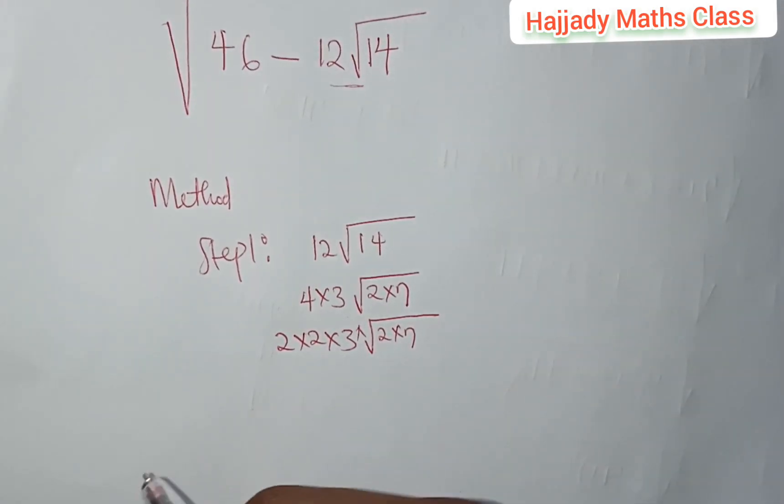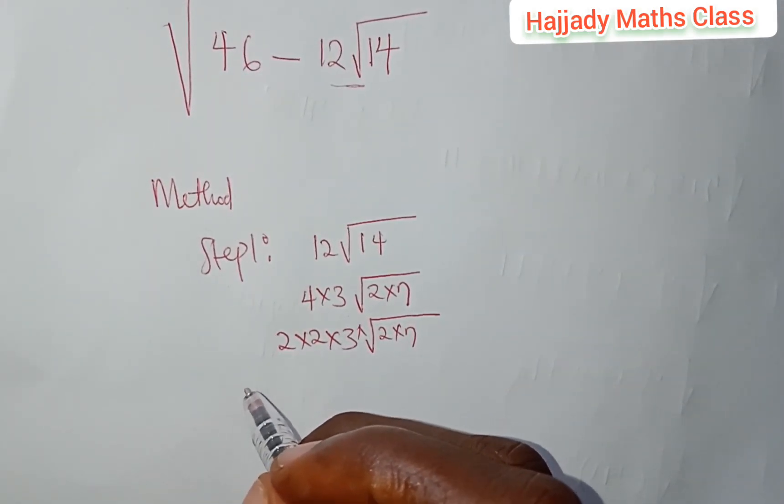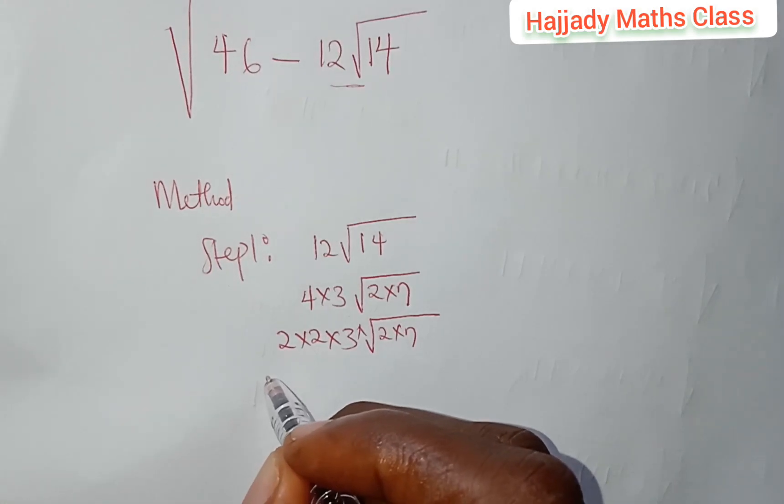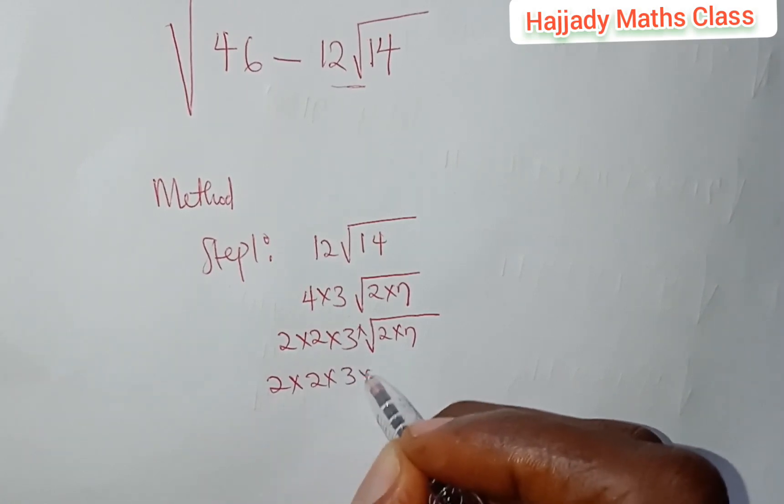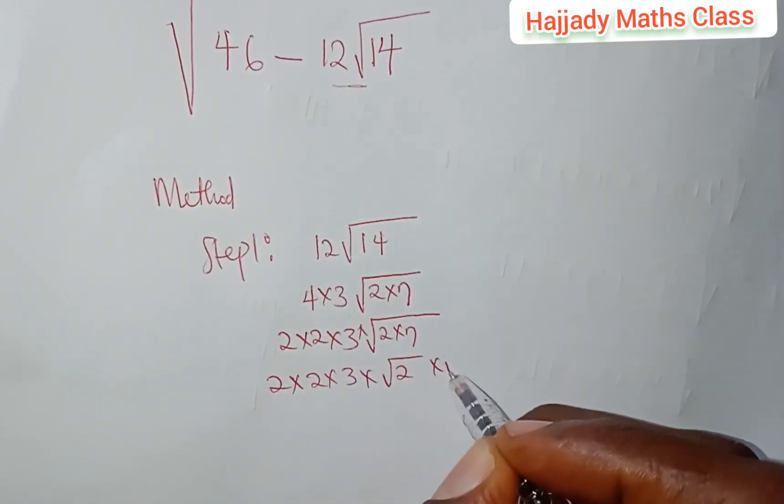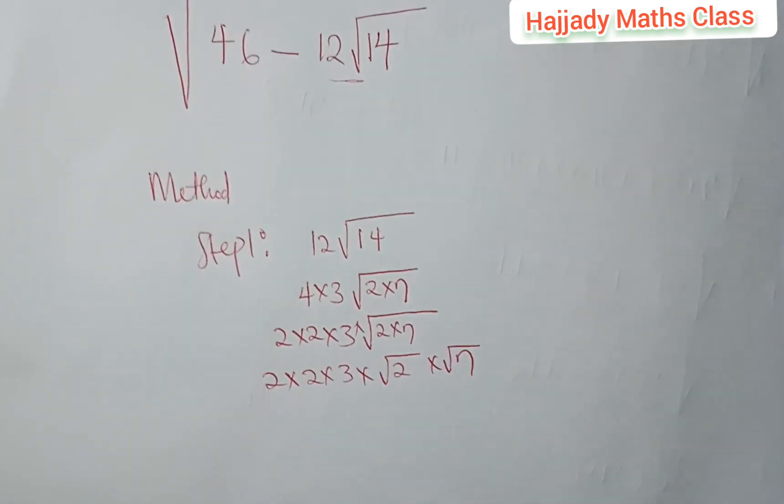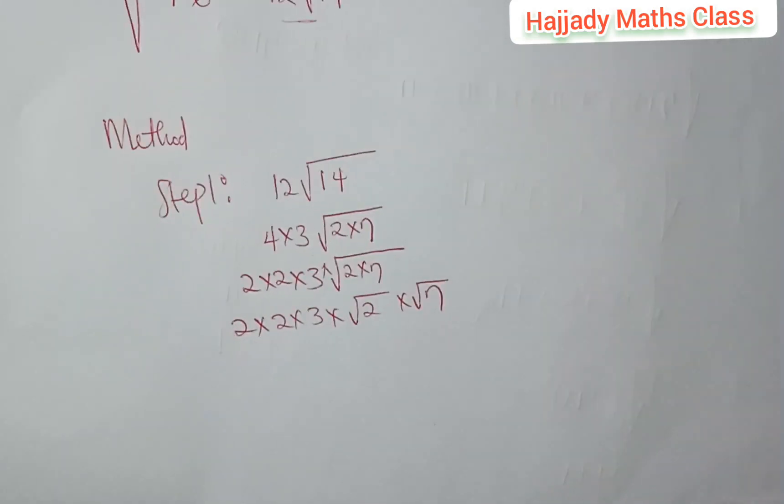Now, splitting this, we can have 2 × 2 × 3 × √2 × √7. Yes, this is very much possible. You can check some of our videos on Shorts. We've talked about this.